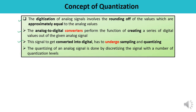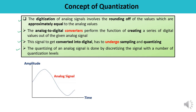First, samples of the analog signal must be taken, then quantization follows. The quantization of an analog signal is done by discretizing the signal with a number of quantization levels. To understand this, consider an analog signal which is continuous in nature. Sampling is done first — samples are taken at different instants of time, say T1, T2, T3.